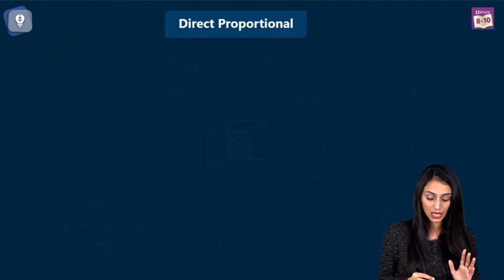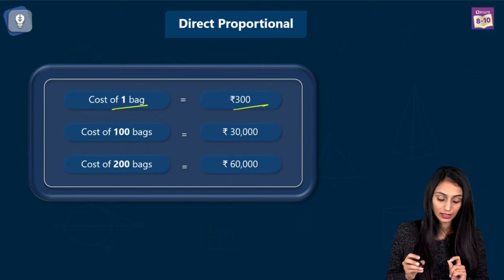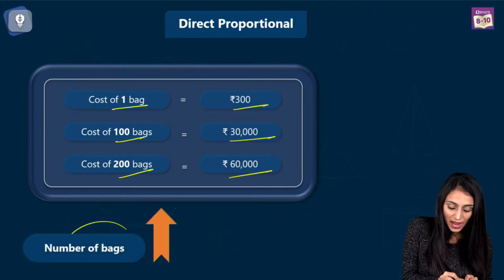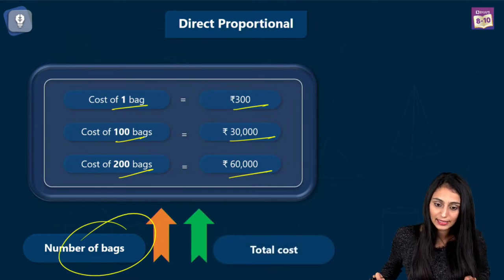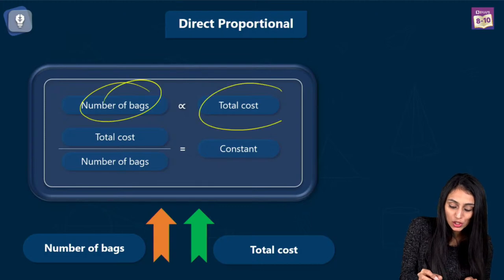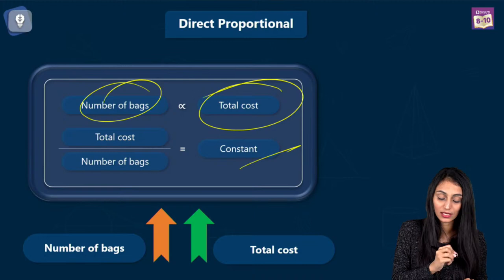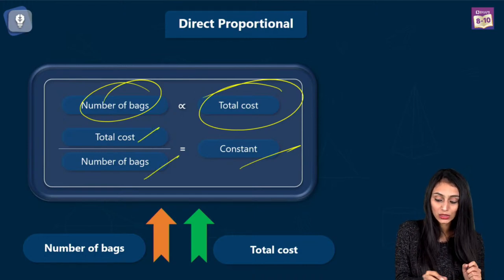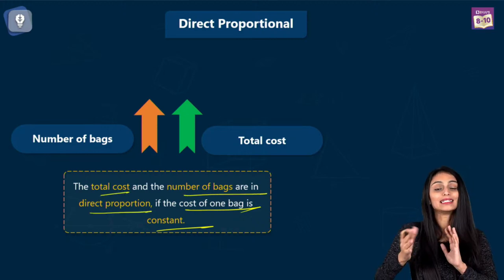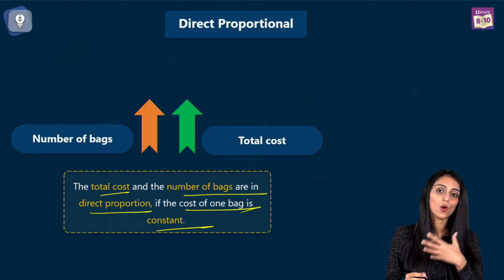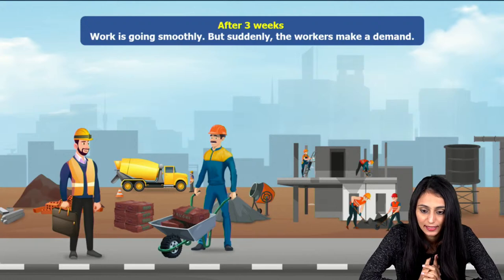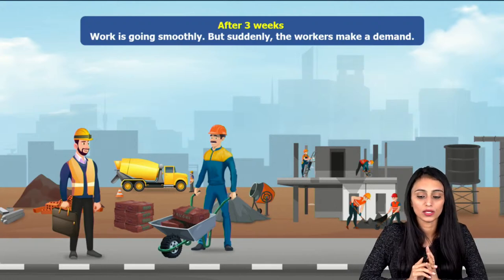Let's take a quick look at what we have discussed. Cost of one bag is rupees 300, cost of 100 bags is rupees 30,000, and cost of 200 bags is 60,000. When the number of bags are increasing, the total cost is also increasing. This is what we call directly proportional. So number of bags are directly proportional to the total cost. If the cost of one bag is constant, then total cost will be directly proportional to the number of bags.